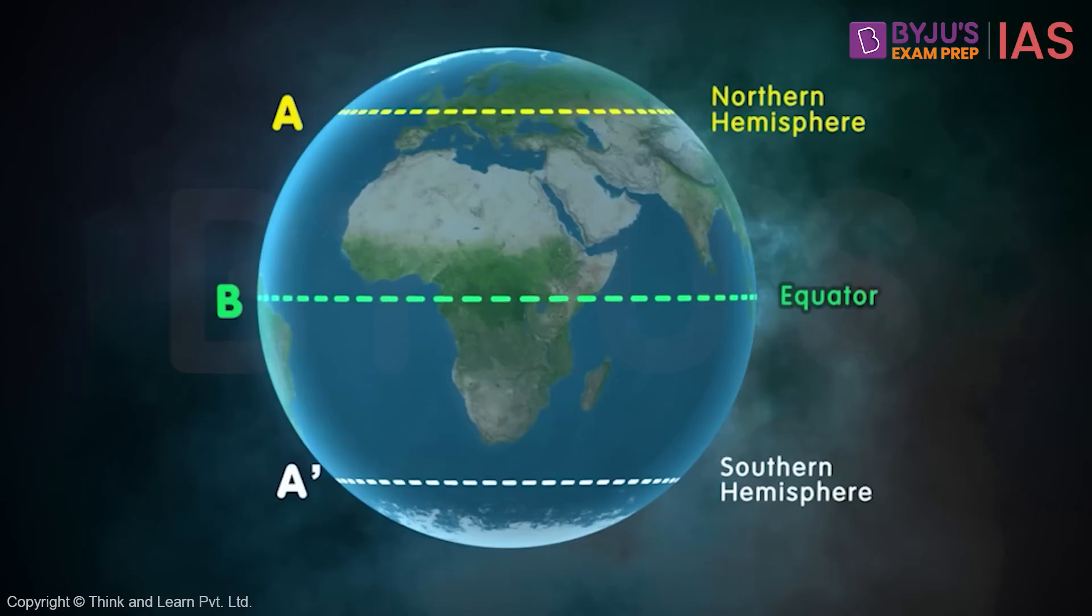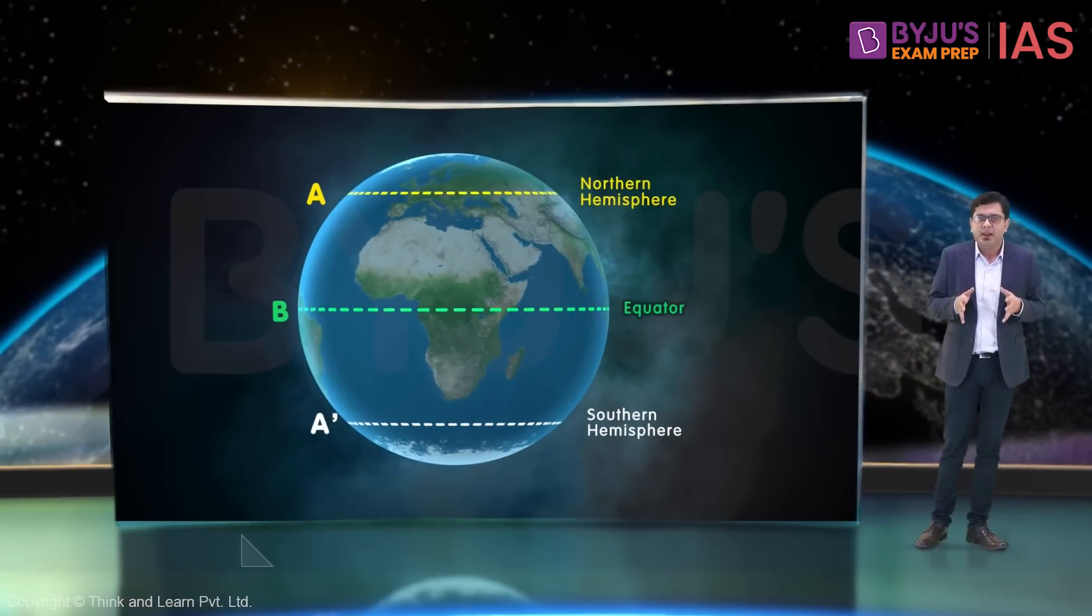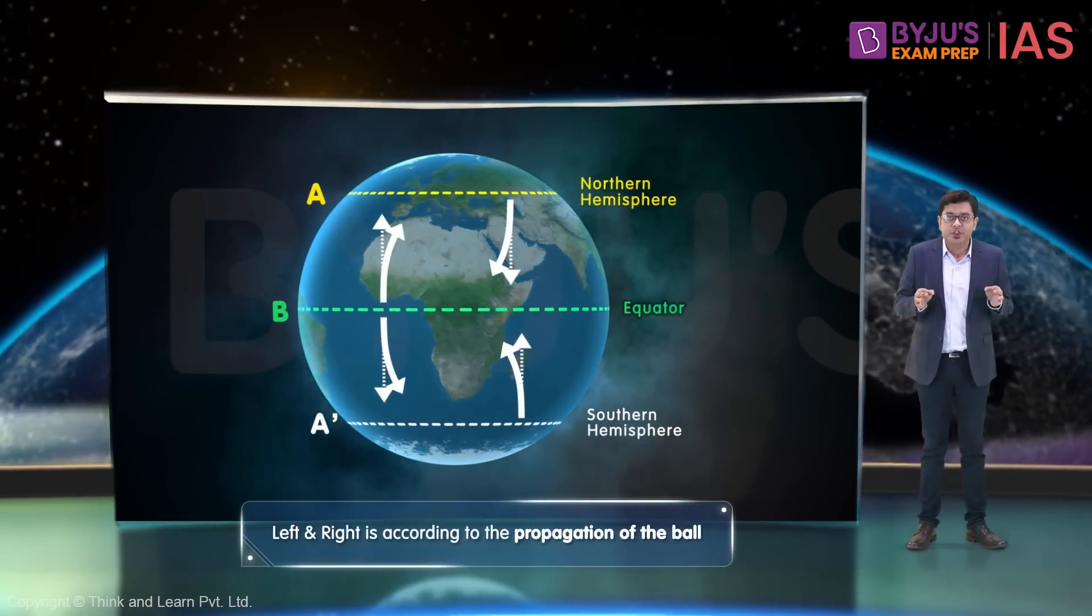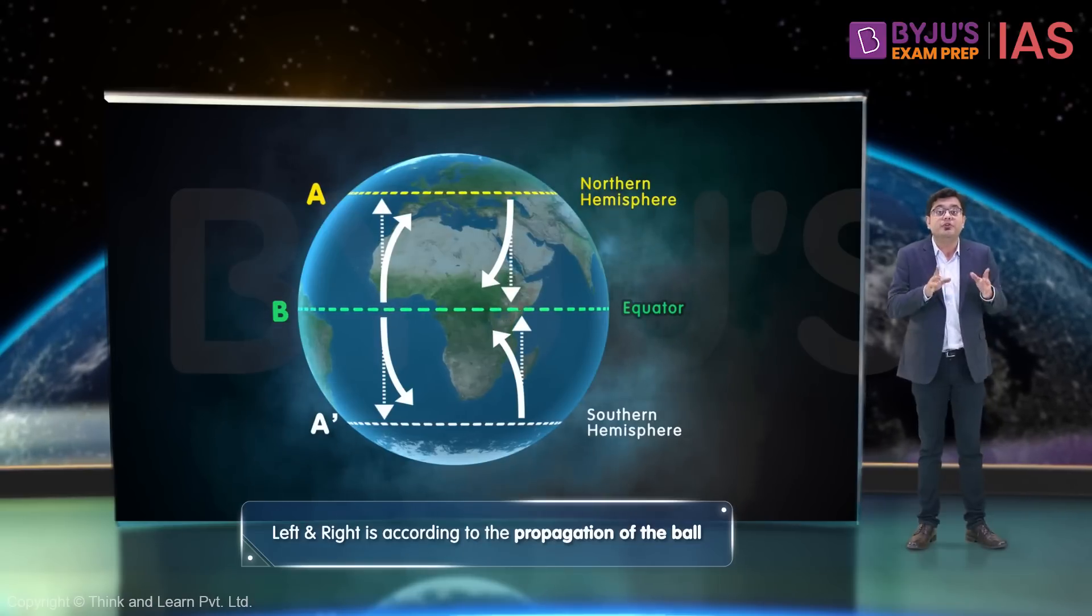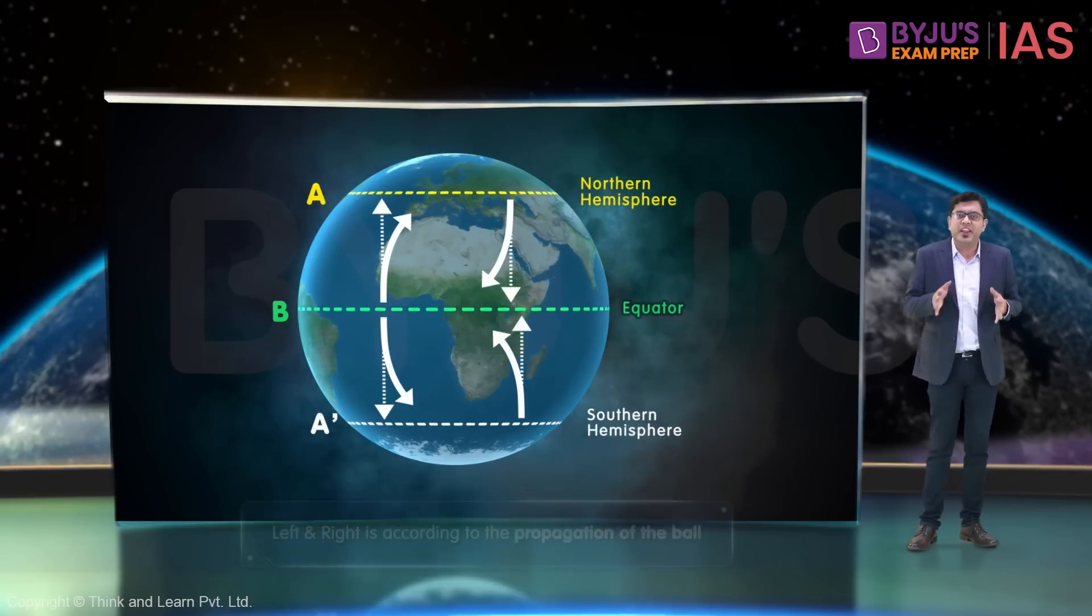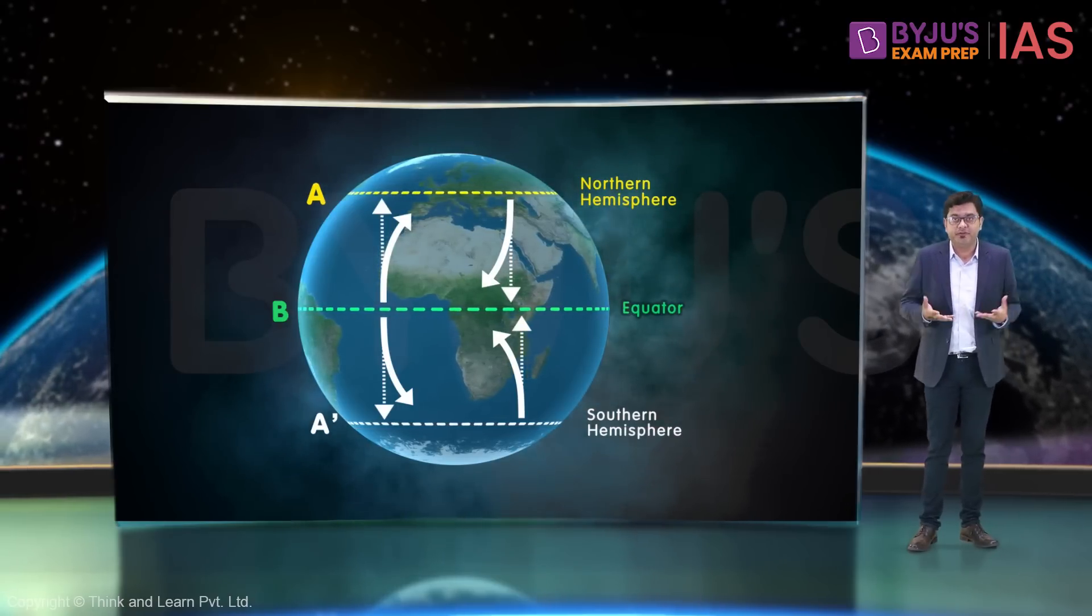In this entire exercise, always remember, left and right deflections are decided on the basis of the direction of propagation of the ball. This apparent deflection is the Coriolis effect.